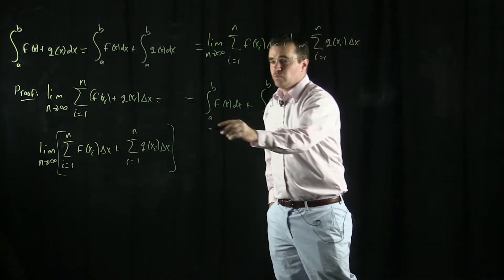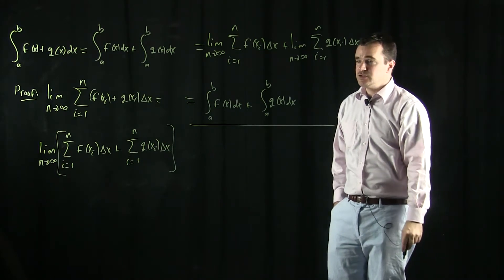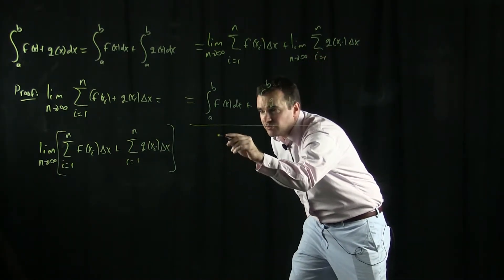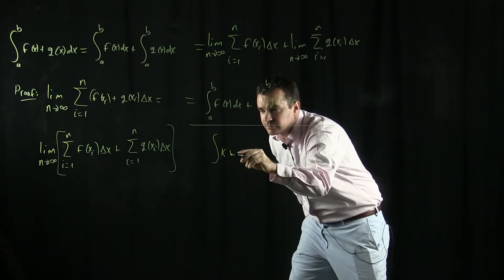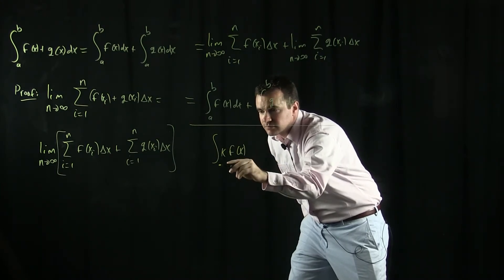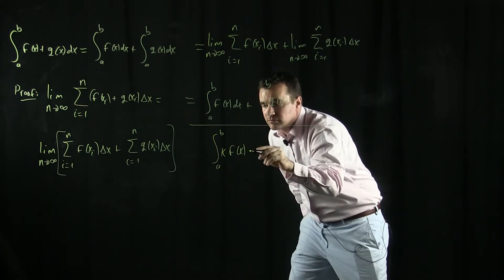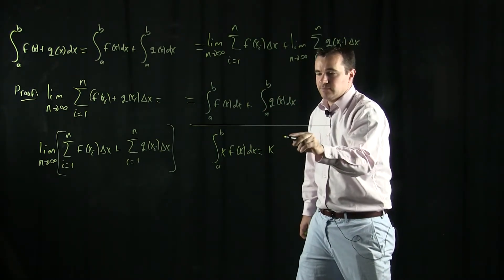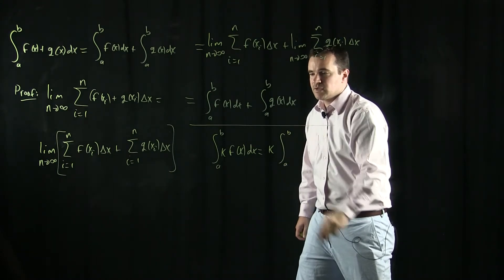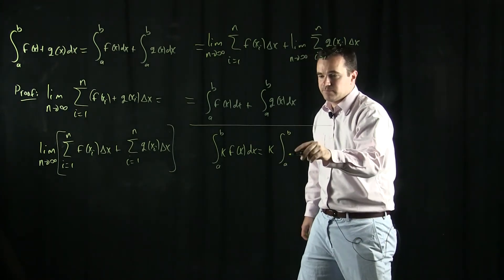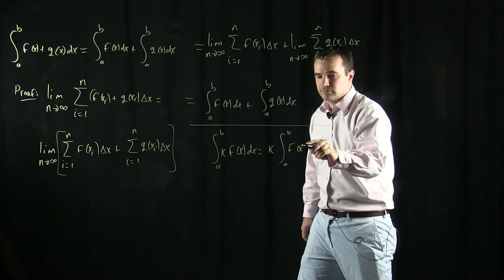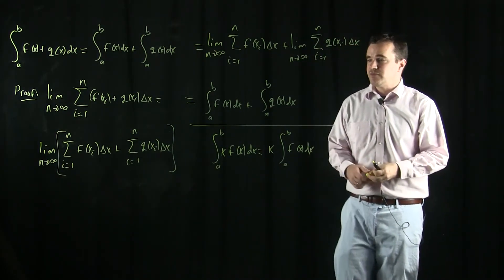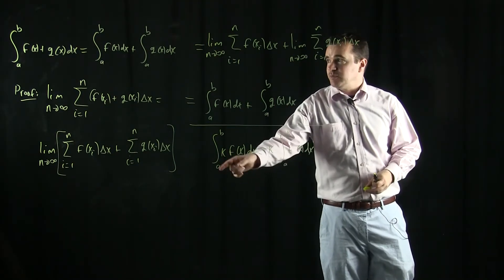And with a completely similar argument just using the limit laws, you can also prove that if you take any constant, say k, and multiply it by f of x, then this is going to be equal to a constant k times the integral from a to b f of x dx. And so the way that you'd actually give a formal proof of this is you'd write down the definition of that.